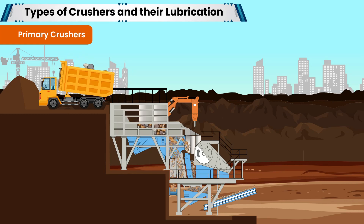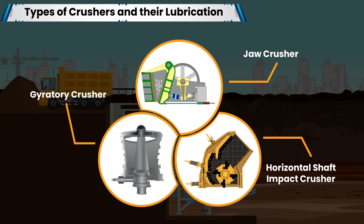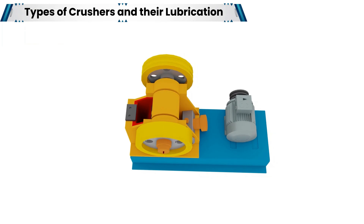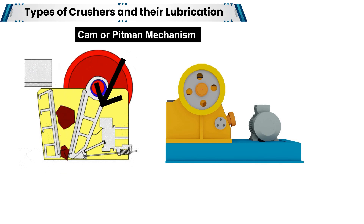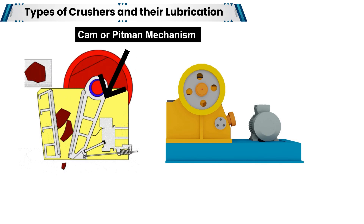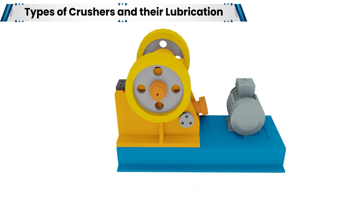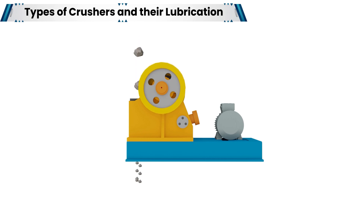Depending on the working principle, there are three types of primary crushers: jaw crusher, horizontal shaft impact crusher, and gyratory crusher. A jaw or toggle crusher consists of a set of vertical jaws — one jaw being fixed and the other moved back and forth by a cam or pitman drive mechanism through the eccentric shaft. The jaws are farther apart at the top than at the bottom, forming a tapered chute so that the material is crushed progressively smaller as it travels downwards until it is small enough to escape from the bottom opening.